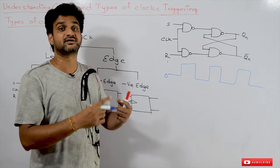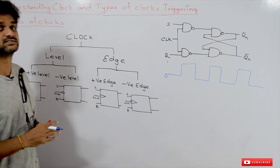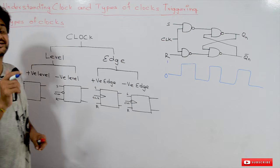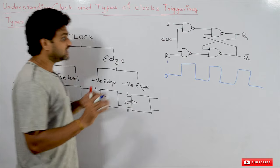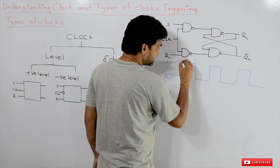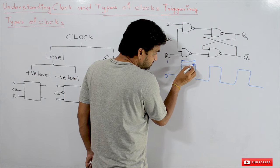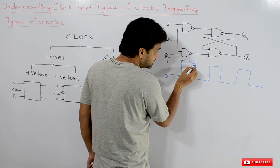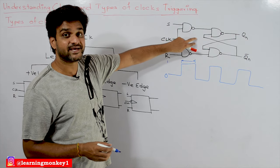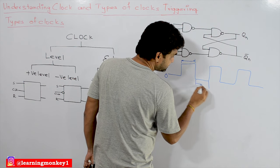Now we will try to understand the different types of clocking mechanisms — clock triggering. There are two different types: one is the level triggering mechanism and the other is the edge triggering mechanism. Level triggering mechanism means whenever the clock is at this level, this is the place where the circuit is allowed to make changes.